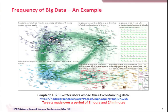Here it shows a very nice example: a graph of 1,026 Twitter users. This data was collected over a period of eight hours and 24 minutes, showing how many tweets use the phrase 'big data' in an eight-hour time frame. You will see all different kinds of things — people are referring to big data analytics, big data cloud, big data jobs, and different kinds of application environments in social media.